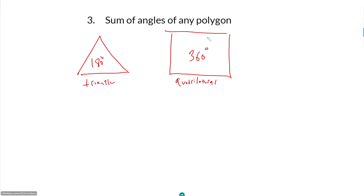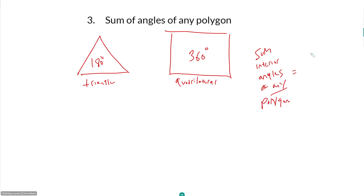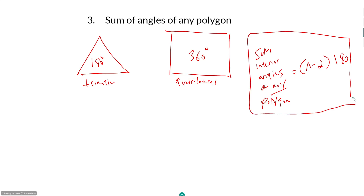You can find the sum of interior angles for any polygon, no matter how many sides, with this formula: sum of interior angles equals (n minus 2) times 180, where n is the number of sides of your polygon. This is useful to know and comes up sometimes.